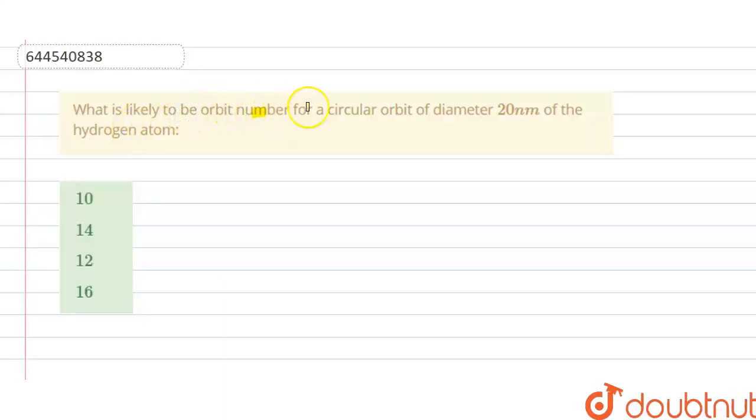Hello students, today our question is: What is likely to be the orbit number for the circular orbit of diameter 20 nanometer of the hydrogen atom? Options A, B, C, D are given here.